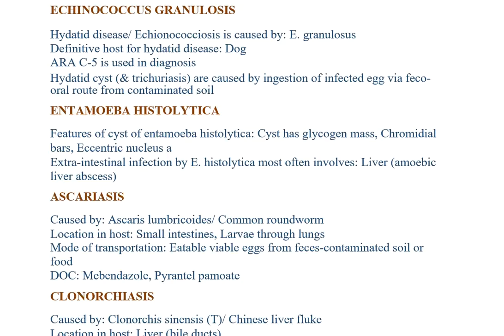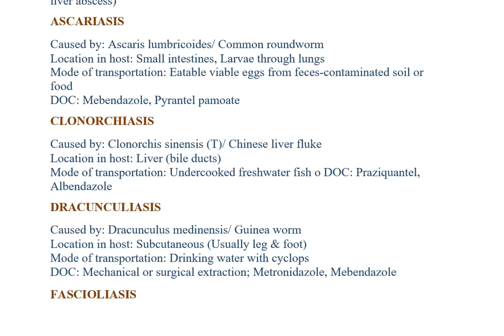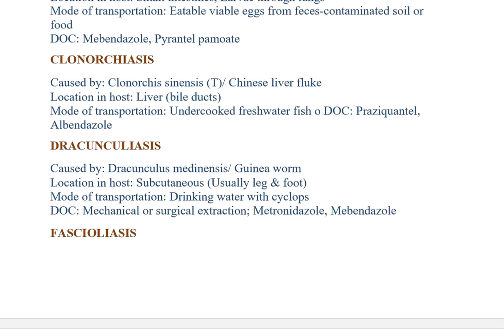Entamoeba histolytica: cyst features — glycogen mass, chromatoid bars, eccentric nucleus. Extra-intestinal infection most commonly involves the liver (amoebic liver abscess). Ascaris caused by Ascaris lumbricoides (common roundworm); location: small intestine; larvae pass through lungs; mode of transmission: ingestion of eggs from contaminated soil or food; drug of choice: mebendazole and pyrantel pamoate. Clonorchiasis caused by Clonorchis sinensis (Chinese liver fluke); location: liver and bile ducts; mode of transmission: undercooked freshwater fish; drug of choice: praziquantel and albendazole. Dracunculiasis (Guinea worm): location — subcutaneous, usually leg and foot; transmission — drinking water containing Cyclops; drug of choice: mechanical/surgical extraction, metronidazole, and mebendazole.